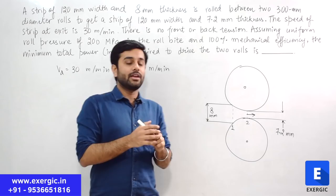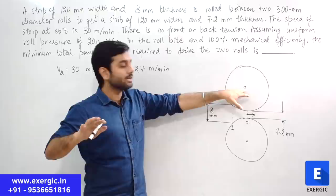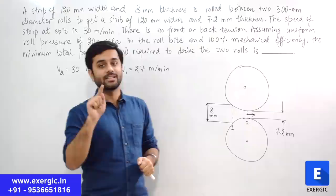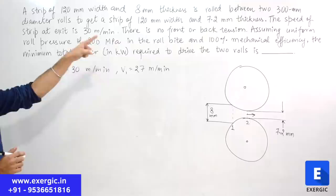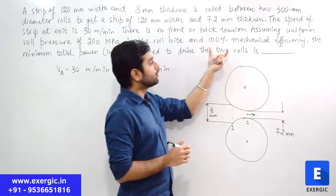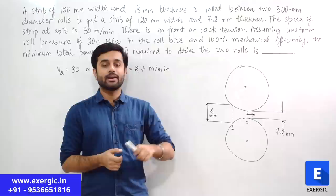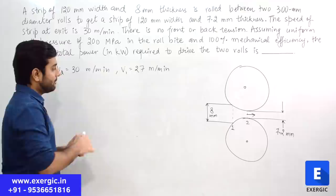At 100% mechanical efficiency, all the power input to the rolls is fully received by them with no losses. This doesn't change our approach here since it's 100%, but if it were, say, 98%, your approach would change accordingly. The question asks for the minimum total power in kilowatts required to drive both rolls, and with 100% efficiency, we consider no losses.